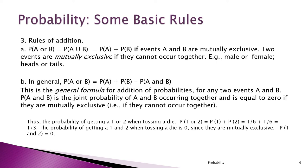When two events A and B are mutually exclusive, the probability of A or B is the probability of A plus the probability of B. Some books use the union symbol, but I'll use the word 'or.' In general, the probability of A or B is the probability of A plus the probability of B minus the probability of A and B — that's the joint probability.